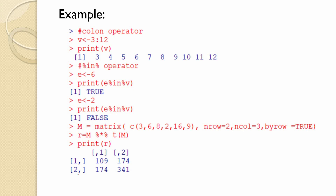For the %*% operator, which is for matrix multiplication with its transpose: we define matrix M with values 3, 6, 8, 2, 16, 9, with 2 rows, 3 columns, arranged by row. We assign R = M %*% t(M), where t(M) is the transpose of matrix M. Printing R gives the resulting matrix obtained by multiplying M with its transpose.